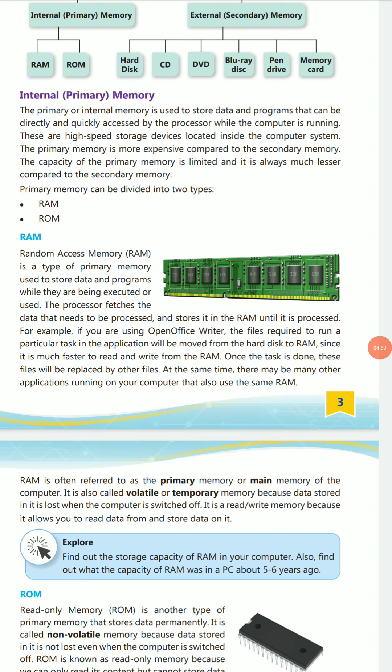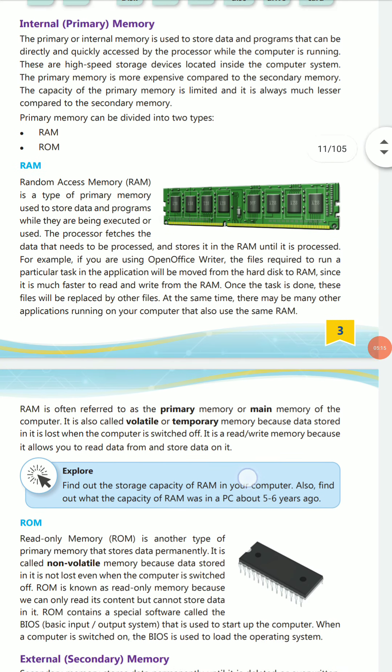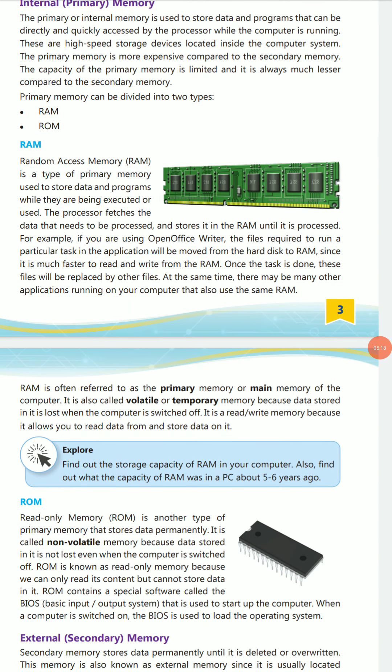Once a task is done, those files are replaced with other files. As we use different applications like Microsoft Office or a media player, files continuously exchange with one another in RAM. RAM is often referred to as the primary memory or main memory of a computer. It is also called volatile memory because data stored in it is lost when the computer is switched off. It is a read-and-write memory.